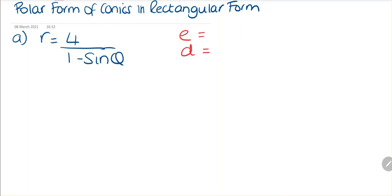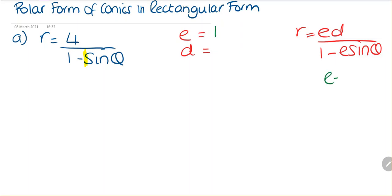We know that r equals ed divided by 1 minus e·sine(theta) from previous lessons. So the eccentricity is going to be 1 in this case, and if e is equal to 1, we're going to have a parabola.